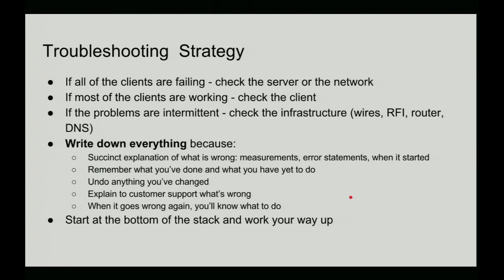Since this is a class on troubleshooting, let's talk about troubleshooting strategy. First, take careful observations of what's working and what's not. If all the clients are failing, check the server or the network. If most clients are working but some aren't, check the client. If the problems are intermittent — the most difficult — check the infrastructure: wires, radio frequency interference, routing issues, distributed name server. These can all contribute to intermittent problems and are a real pain to track down because when it starts working again, you don't know if you fixed it or if it just stopped being intermittent.